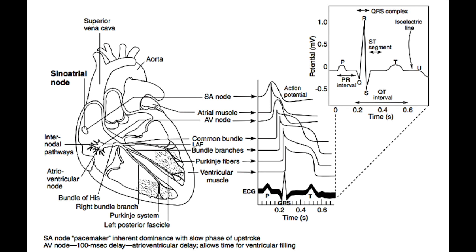The AV node then activates as well. Remember that the AV node is not made of muscle, therefore you cannot see it on the surface electrocardiogram. It depolarizes and then activates the bundle branches and the Purkinje fibers, but you don't see anything on the electrocardiogram until the QRS complex. The QRS complex is representative of ventricular muscle depolarization. The Purkinje fibers, bundle branches, and AV node do not show up on the surface 12-lead EKG — only muscular depolarization does, because it is much more massive and easier to detect from the skin electrodes.